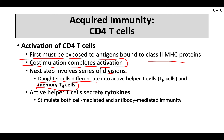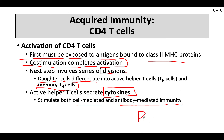Active helper T cells secrete cytokines — that's their main job — and those cytokines stimulate cell-mediated responses as well as antibody-mediated immunity. The role in activation of B cells is especially important to our immune system.